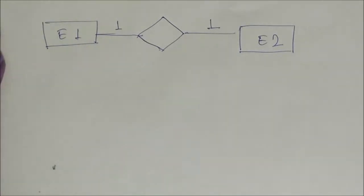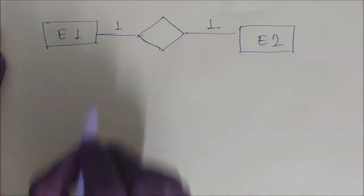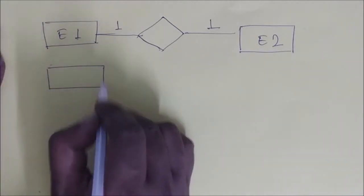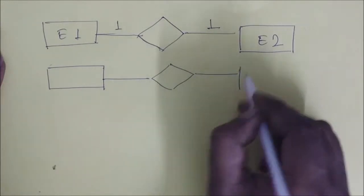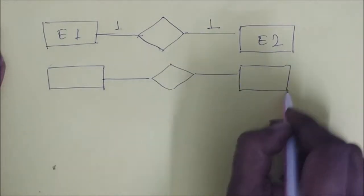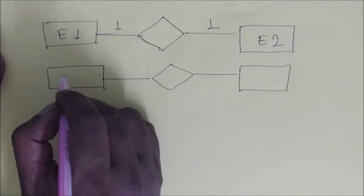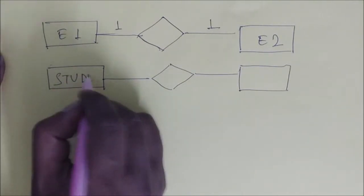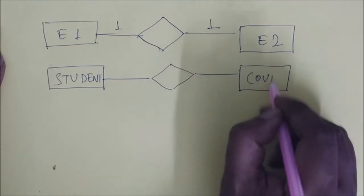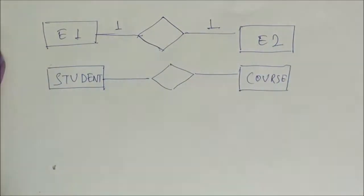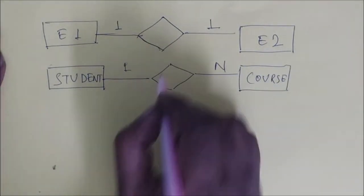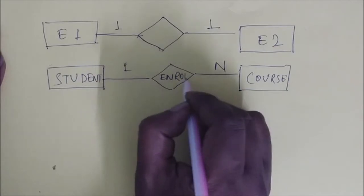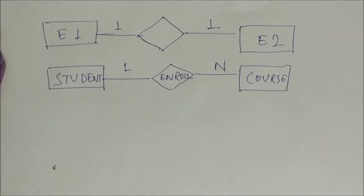If there is a one-to-many relationship, we represent it differently. For example, student and course — one student may have n number of courses. So you can say this is an enroll relationship.